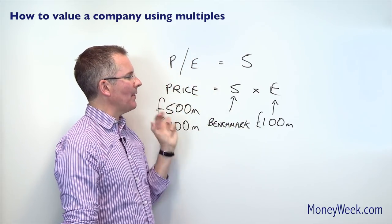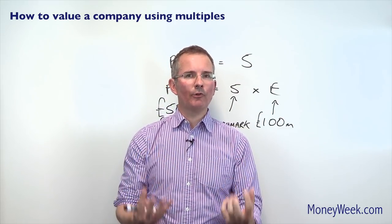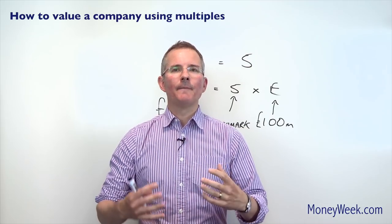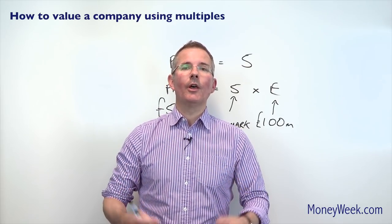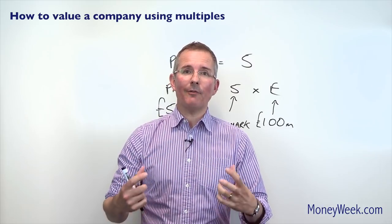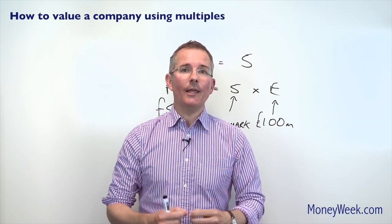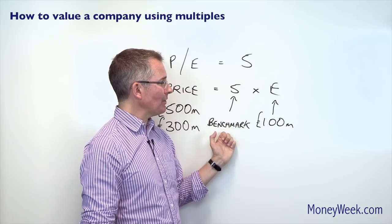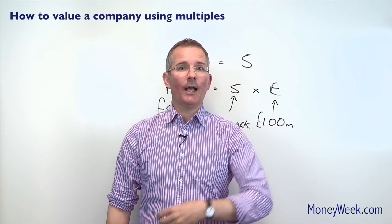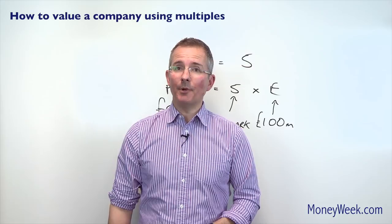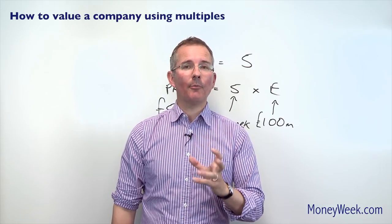So there it is — the multiples-based approach to valuing a firm, deciding how much it's worth, or whether an existing firm is cheap or expensive. Like all these methods, it's more art than science: you've got to pick the right multiple — earnings-based, sales-based, or asset-based — depending on the type of company. And secondly, you've got to be comfortable you've got your benchmark right. Finding truly similar companies and deciding how many to use is a matter of judgment in practice. That's the second of three methods for putting a value on a company.